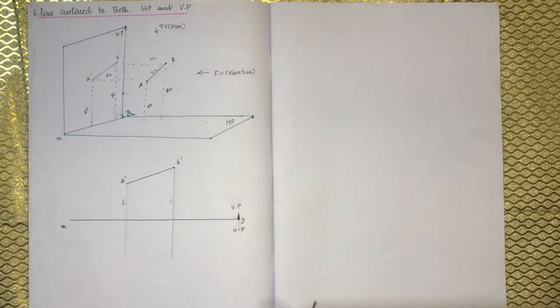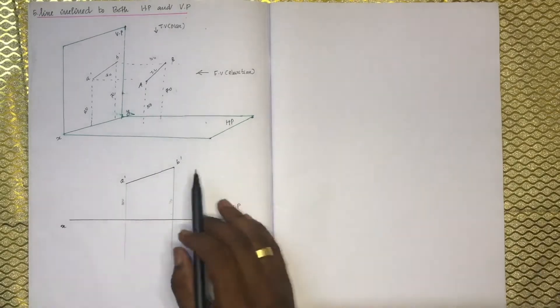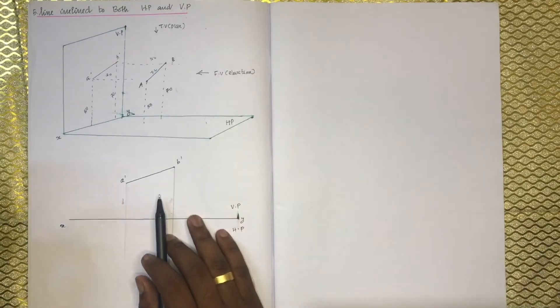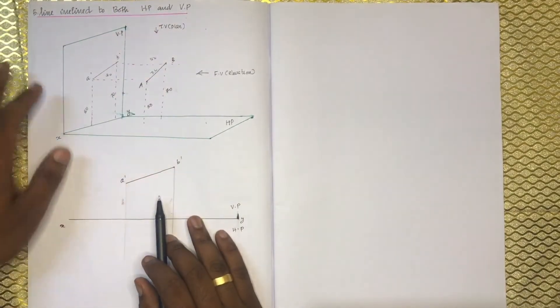So A' and B' will be inclined to the XY line. Now, we are having the condition that the line is actually inclined to HP.